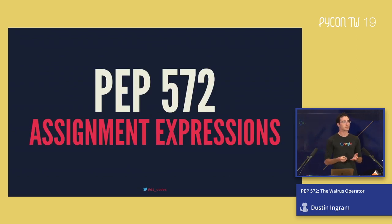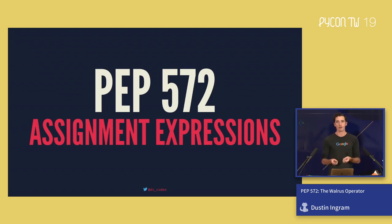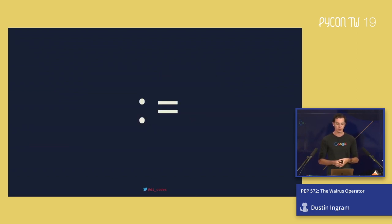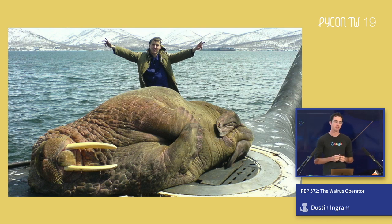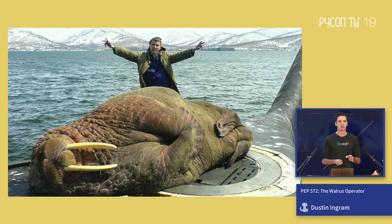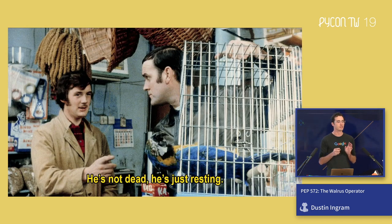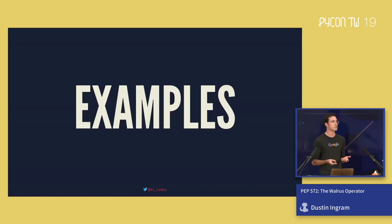PEP 572 was called assignment expressions, and it caused a little bit of drama in the Python community. This is the syntax change responsible for all the drama. It has a name — I'm not going to tell you what it is. I'm going to call it the walrus operator because it kind of looks like a walrus lying on his side. I want to advise you that this walrus is not dead; he is just resting. So what do we do with the walrus operator? Let's look at some examples.